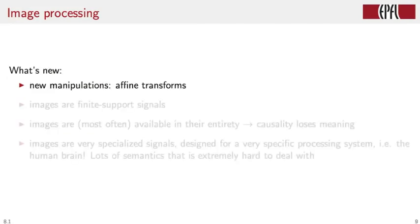New concepts that appear in image processing is the fact that we can introduce a new class of manipulations called affine transforms. These include rotation, scaling, skewing of images, things you do in Photoshop all the time. The fact that images are finite support signals - by definition, you take an image with a camera, and the CCD, the sensor of the camera, has a finite surface, so they're intrinsically finite support.